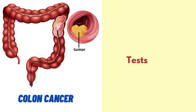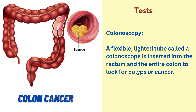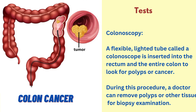Now, let's discuss about the tests. The first test is the colonoscopy test. A flexible, lighted tube called a colonoscope is inserted into the rectum and the entire colon to look for polyps or cancer. During this procedure, a doctor can remove polyps or other tissues for biopsy examination.